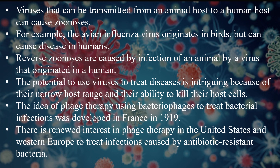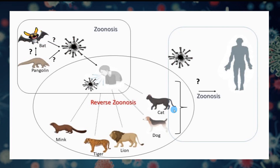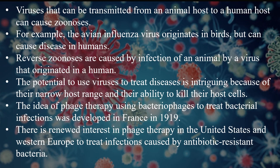Viruses can be transmitted from an animal host to a human host and they cause zoonosis. For example, the avian influenza virus, which originates in birds, can cause disease in humans. An infection of an animal by a virus that originated in a human causes reverse zoonosis. The use of viruses to treat infections — phage therapy, using bacteriophages to treat bacterial infections — was developed in France in the early twentieth century.